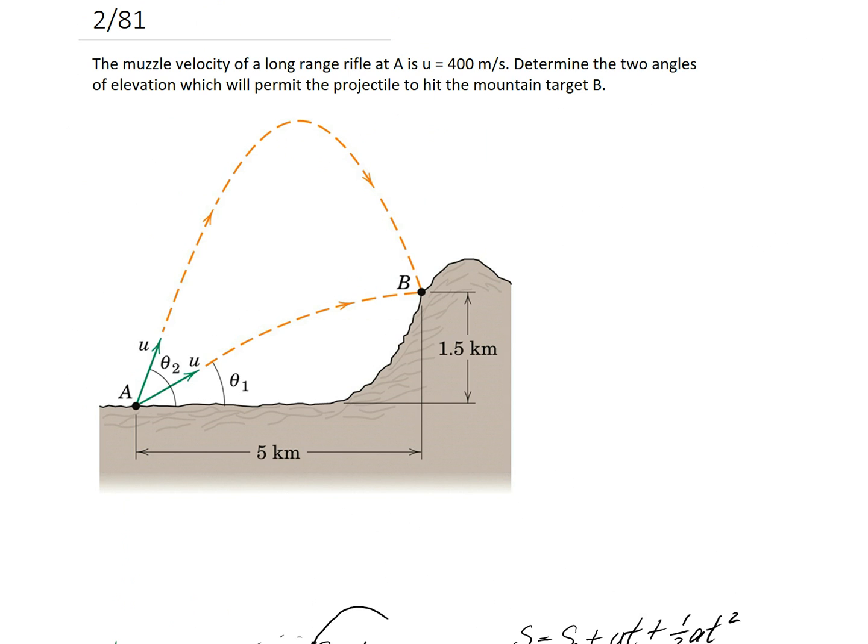The question asks us to determine the two angles of elevation which will permit the projectile to hit the mountain target B. Just looking at this diagram, you should be able to tell that your angle theta has to be between 0 and 90 degrees, otherwise it's not going to make sense.